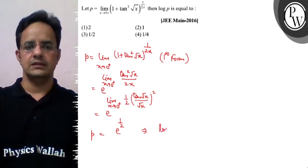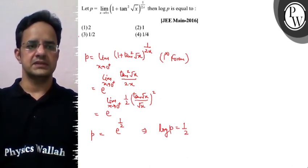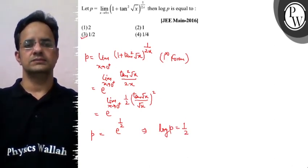Agar hum log lete hai then we say log p equal to 1 upon 2. So final answer of this problem is option 3, 1 upon 2